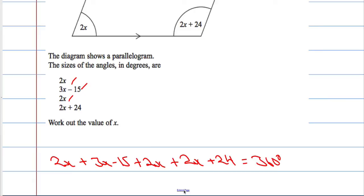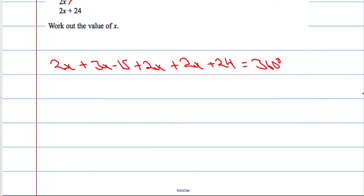So now I know that I am going to tidy up the left hand side of this equation. I am going to collect like terms together. So 2x, 3x is 5x, 7x, 9x. So 9x and then we got minus 15 plus 24 gives us 9. It must be equal to 360 degrees.